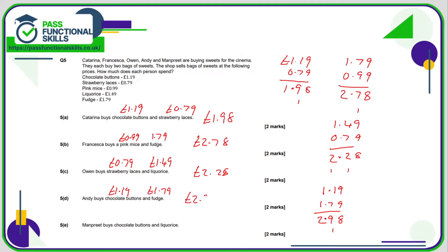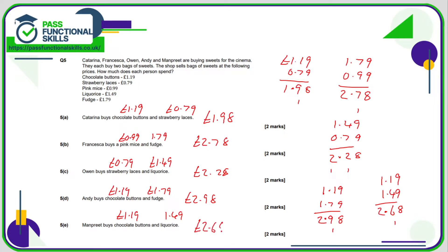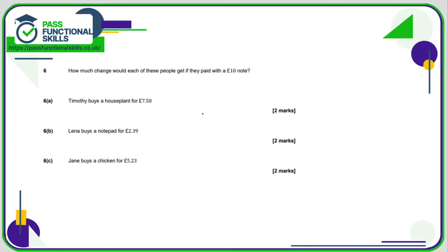Chocolate buttons and liquorice: £1.19 plus £1.49. Column method: 9 plus 9 is 18, carry one; 4 plus 1 plus 1 is 6; 1 plus 1 is 2 — that comes to a total of two pounds sixty-eight pence.